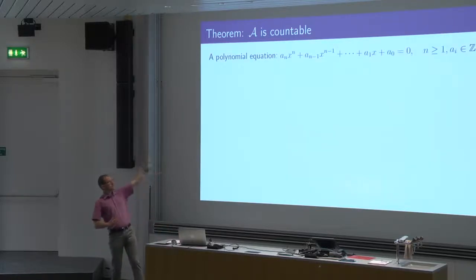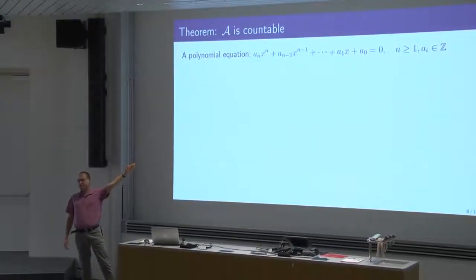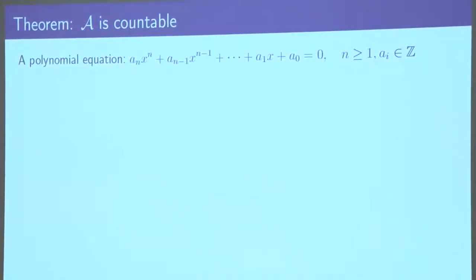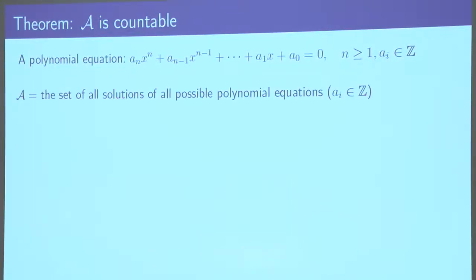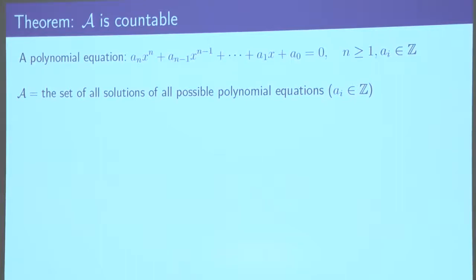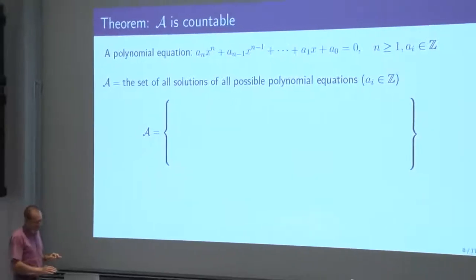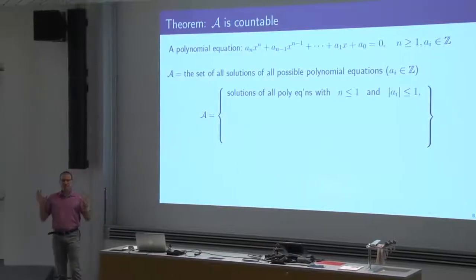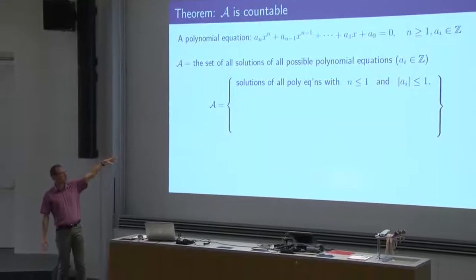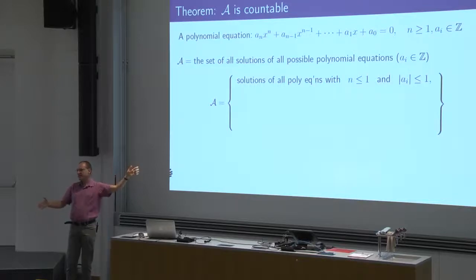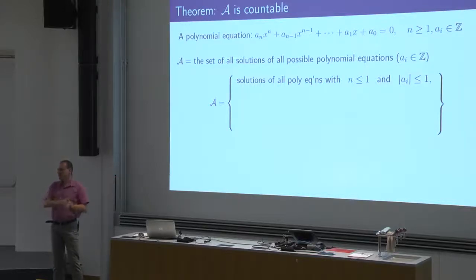For this, let's have on the screen a polynomial equation of degree n with coefficients an, an-1, up to a0, all integers. That's our polynomial equation, and curly A is the set of all solutions of all polynomial equations — these are the algebraic numbers. First consider all possible polynomial equations of degree at most 1 and all coefficients in absolute value up to 1 — the coefficients can only be 0, 1, and minus 1.